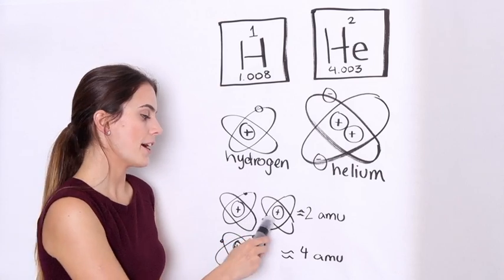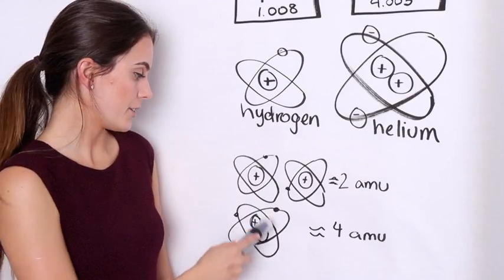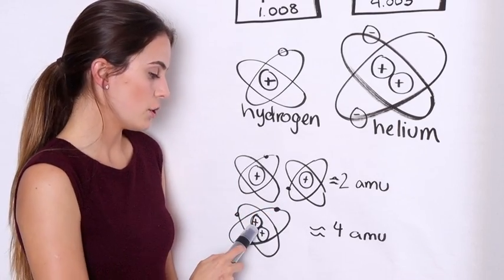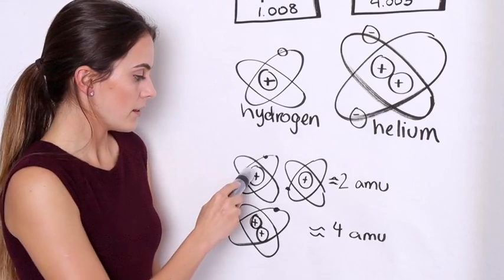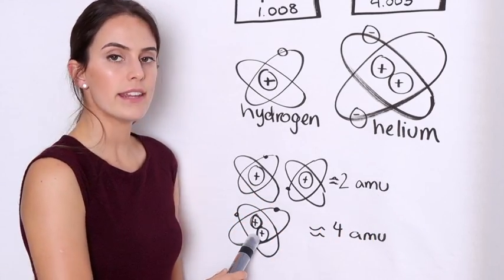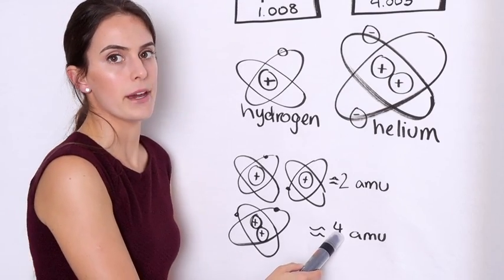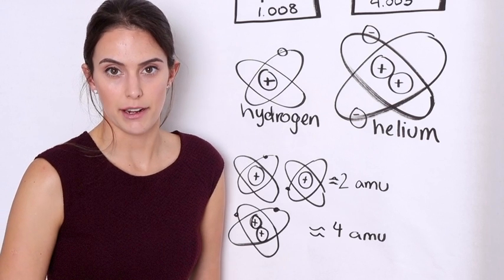Then they looked at two hydrogen atoms compared to one helium atom. There are two protons here and two protons here. When compared though, the two hydrogen atoms were two amu and the one helium atom was four amu. Helium still had double the weight of two hydrogen atoms.